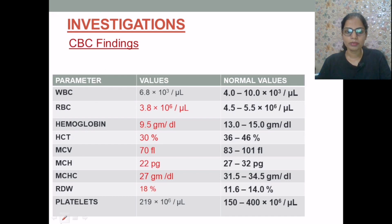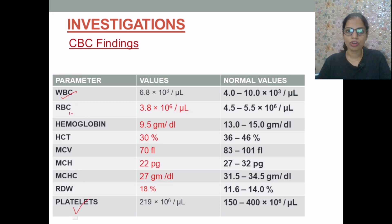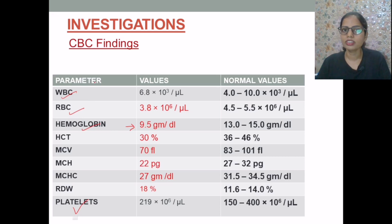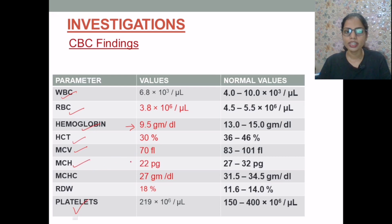The patient was subjected to CBC findings. WBC and platelets were within normal range. RBC was found to be decreased. Hemoglobin was found to be decreased, placing the subject in the category of moderate anemia. Hematocrit is 30%, which is also reduced. Mean corpuscular volume is 70 femtolitres, which is also reduced. MCH, the mean corpuscular hemoglobin, is 22 picograms, which is also reduced. MCHC, the mean corpuscular hemoglobin concentration, is 27 g/dL, which is decreased. RDW, the RBC distribution width, is 18%, which is found to be increased.